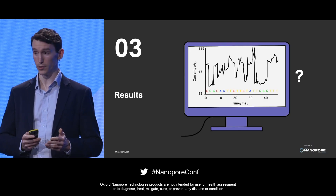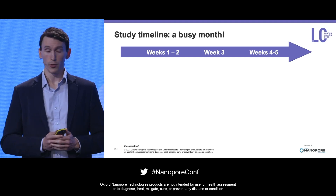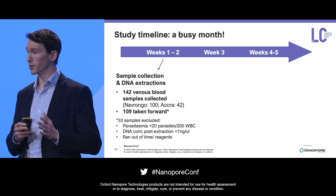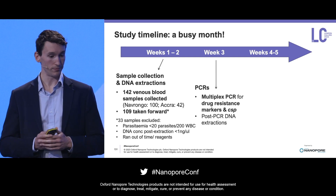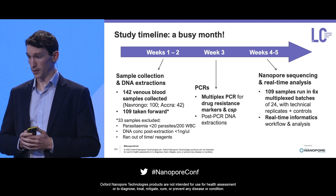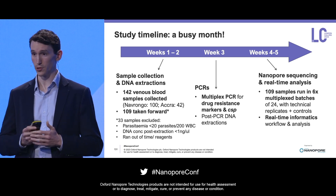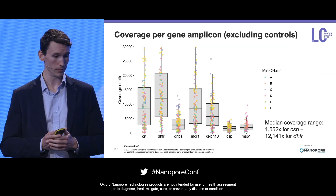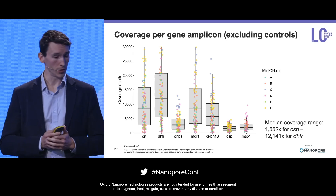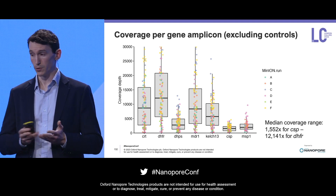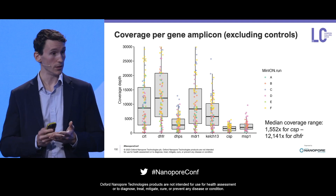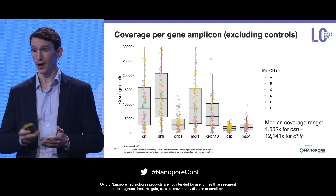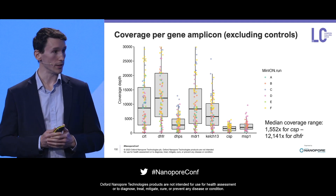Moving on to the results — we packed quite a lot into a pretty short space of time. In the first few weeks we collected around 140 samples and excluded some that were very low parasitemia or that we didn't get much DNA from. Within about six weeks we could generate end-to-end over a hundred samples through to final analysis. We had very high coverage using our amplicon sequencing assay — in excess of thousands of x coverage for each amplicon. Even the lowest covered amplicon, which was CSP, had over a thousand x. So we're very confident this assay could support higher levels of multiplexing than 24 — certainly 96, if not higher.